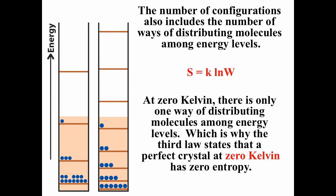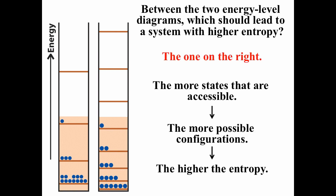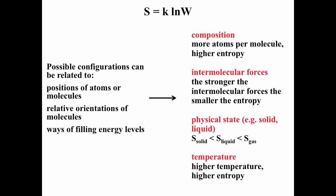At zero Kelvin, there's only one way of distributing particles into energy levels. Often when we talk about zero Kelvin for entropy, it's because we don't want to be concerned about configurations from energy levels, as that's more complicated. Between the two systems on the left, the one on the right has more states, more possible configurations, and hence higher entropy. We can relate this to composition, intermolecular forces, physical state, and temperature.